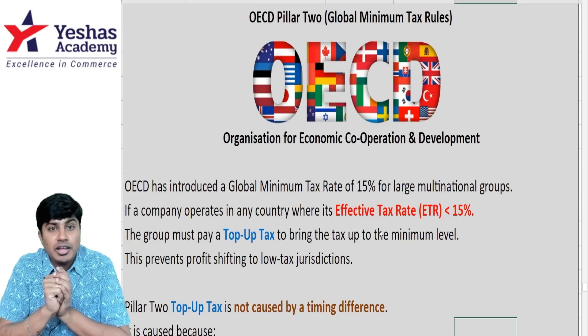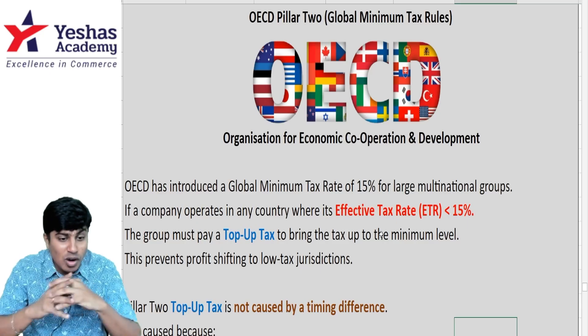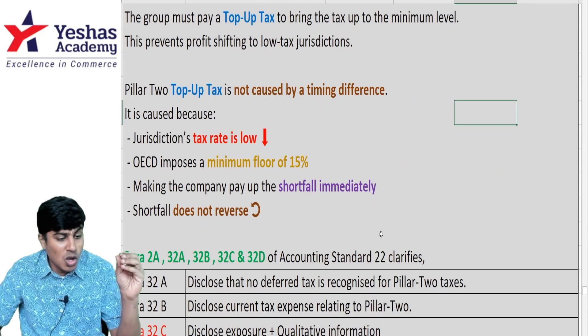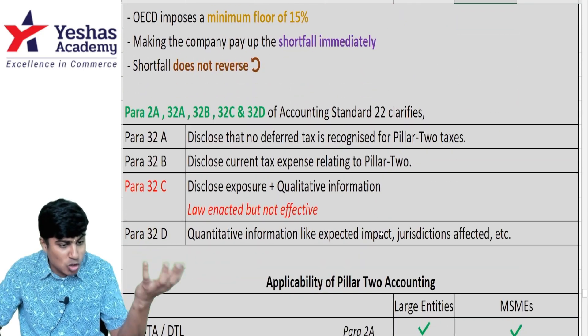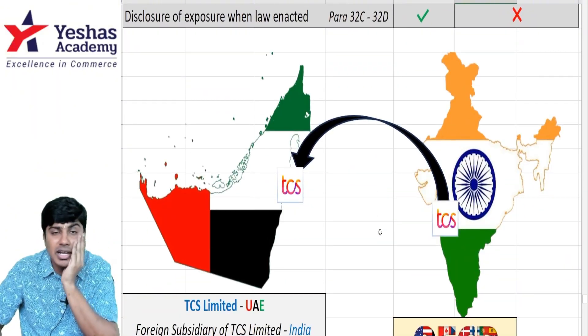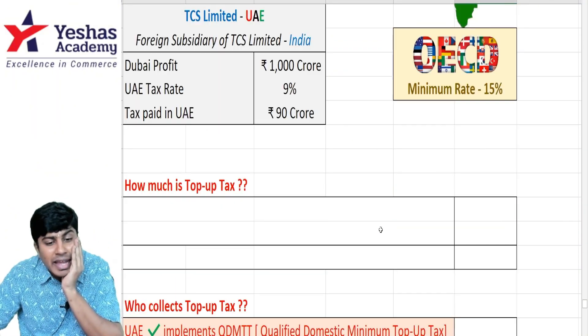What is OECD? What is pillar 2 taxation? What is global minimum tax rules? What is this top-up tax? What is this DTA, DTL? What's all this?